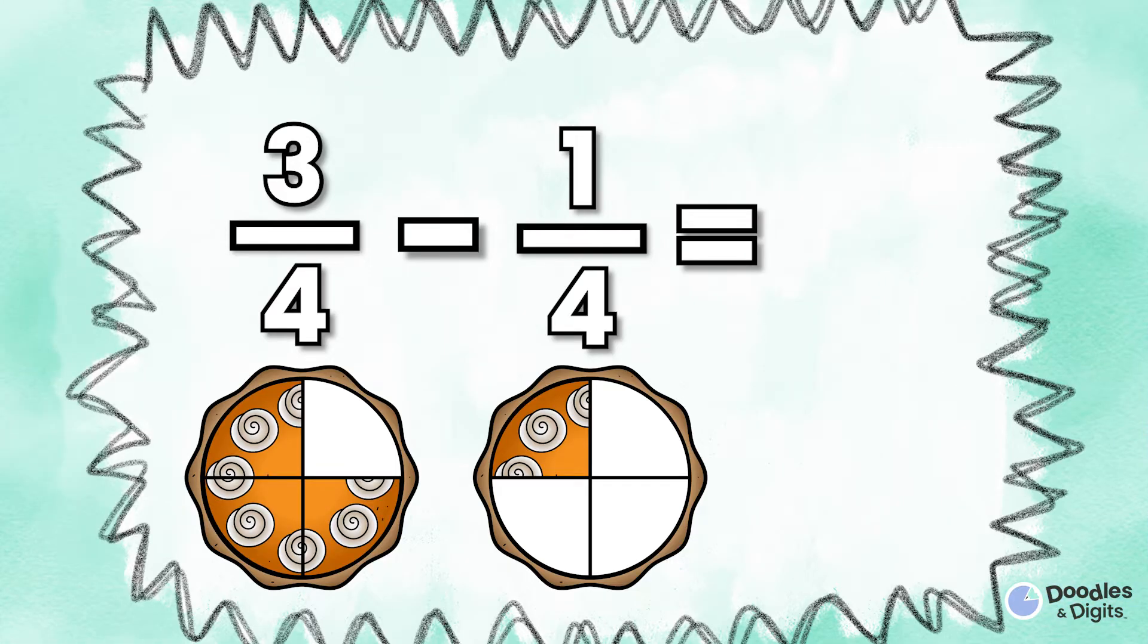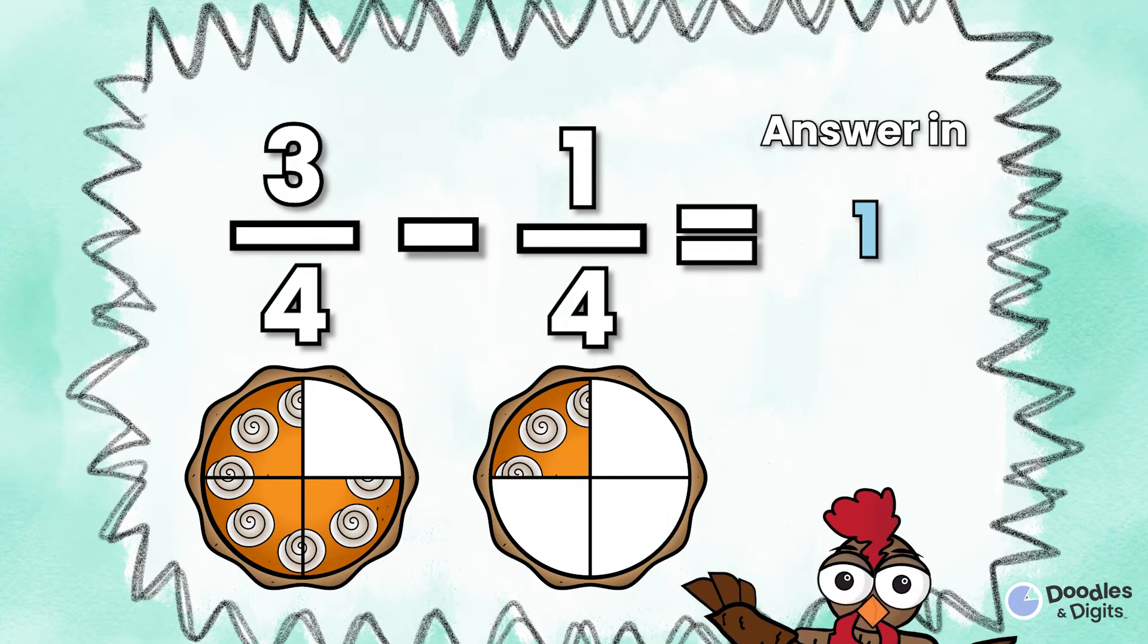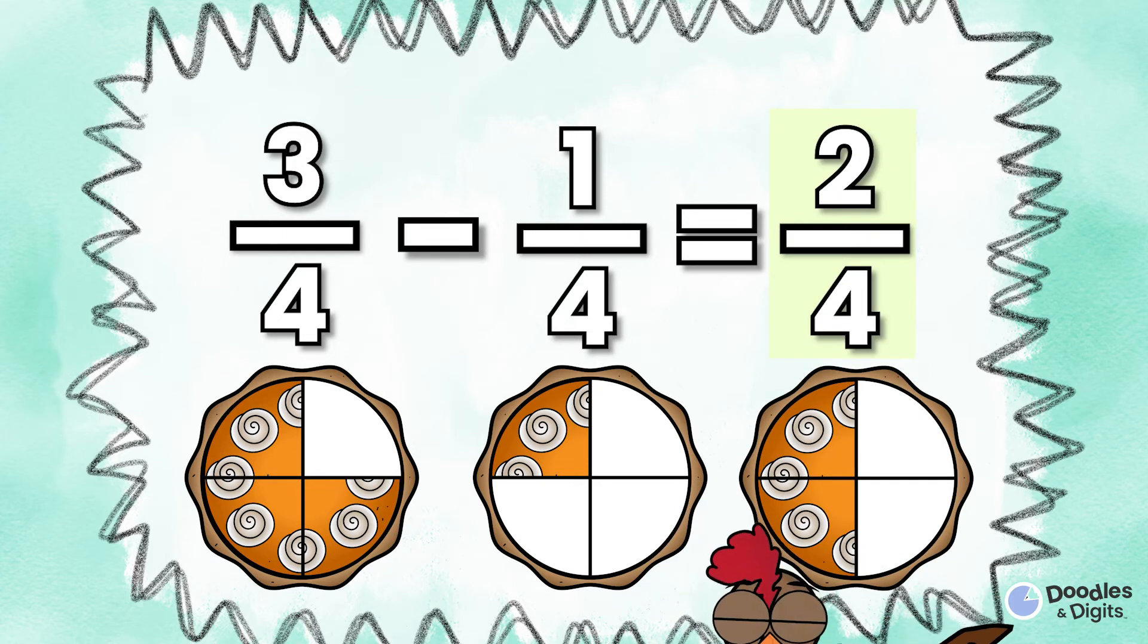Three fourths minus one fourth. Three fourths minus one fourth equals two fourths.